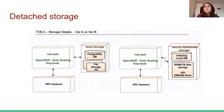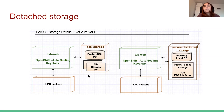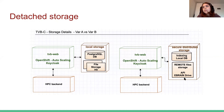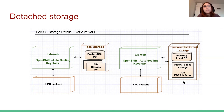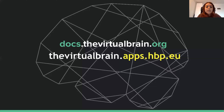To summarize the storage direction: instead of having local storage on OpenShift, we would go towards remote storage accessible by an API, which might be the eBrains Drive API. And that would be all — thank you.